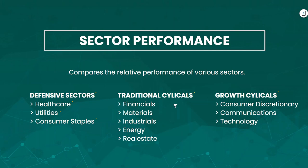Defensive sectors include healthcare, utilities, and consumer staples. On the other end we have cyclicals — these companies are much more sensitive to changes in the business cycle, and these sectors include financials, materials, industrials, energy, and real estate. Growth is also very sensitive to the business cycle, however we like to separate growth cyclicals from traditional cyclicals, as many companies within technology and communications have a very high market cap. Since the S&P 500 is market-cap weighted, movements in these stocks or sectors tend to pull the S&P 500 with them, so it's always important to know where growth is — are they outperforming or underperforming — as it gives us a lot of insight into risk-on/risk-off sentiment.